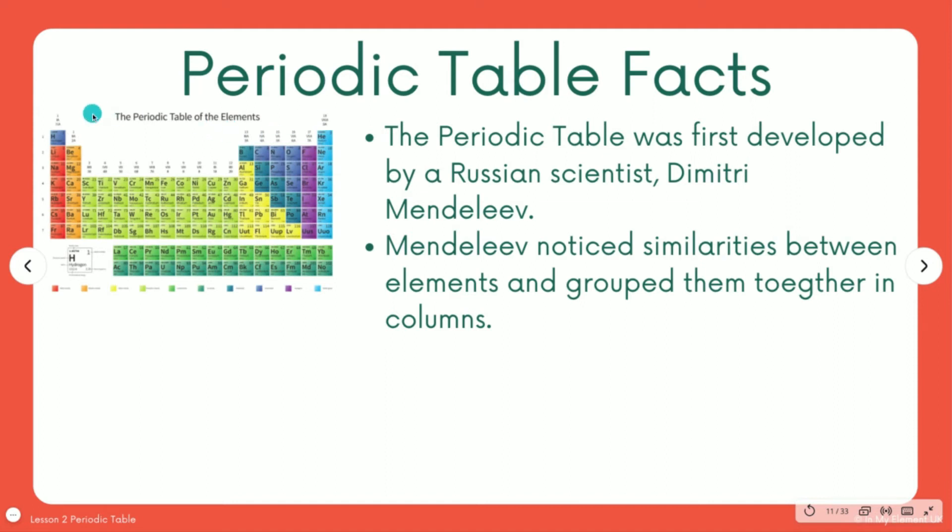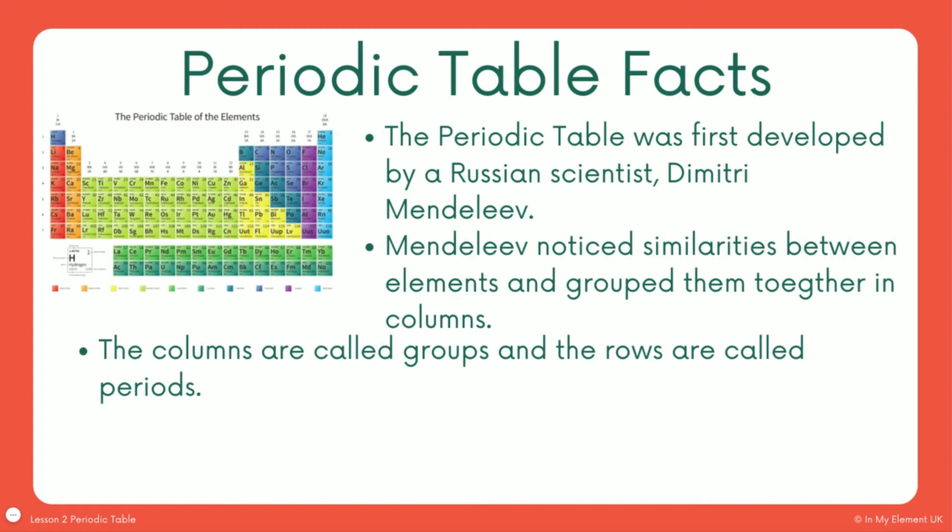In each group, the elements are grouped together because they have similar properties. What you also need to be aware of is the properties in a group can be used to predict the reactivity of the different metals within the same group. So if you did one reaction, let's take group one, for example, because these are also known as the alkali metals. If you did a reaction with lithium and then you did a reaction with potassium, say you reacted both of those with water, the reactions of those two elements would enable you to predict the reactions if you put cesium into water.